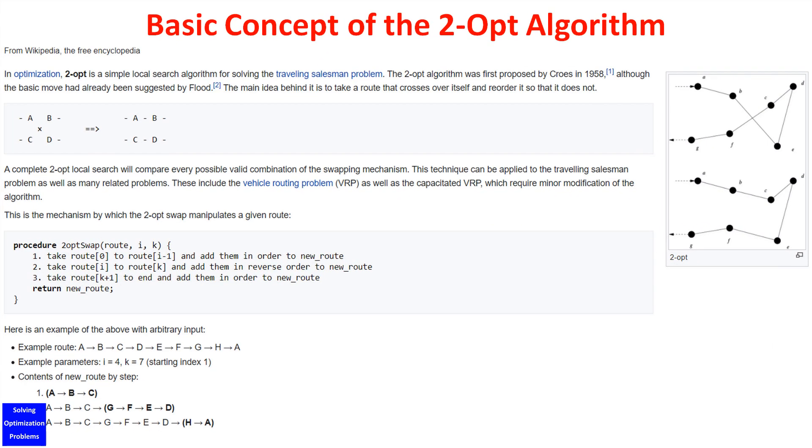The 2-opt algorithm is a simple local search algorithm for solving the traveling salesman problem. The 2-opt algorithm was first proposed by Croos in 1958, although the basic move had already been suggested by Flood. The main idea behind it is to take a route that crosses over itself and reorder it. A complete 2-opt local search will compare every possible valid combination of the swapping mechanism. This technique can be applied to the traveling salesman problem as well as many related problems.